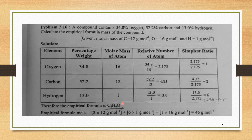From this empirical formula, the empirical formula mass is calculated as: (2 × 12) + (6 × 1) + (1 × 16) = 24 + 6 + 16 = 46 grams per mole. This is the empirical formula mass of the given compound.